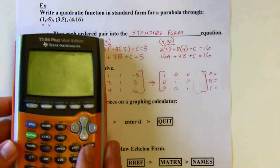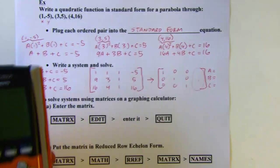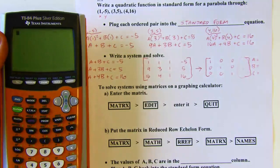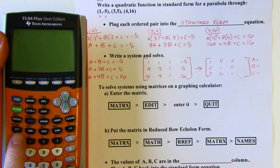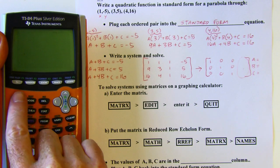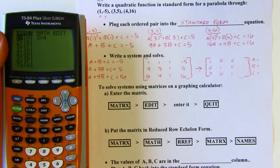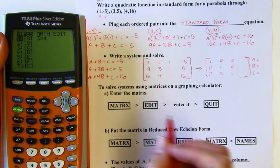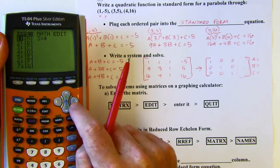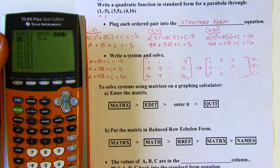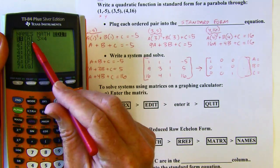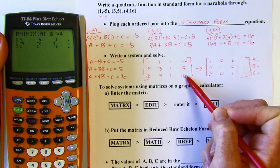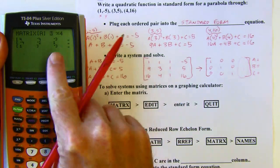So here's my calculator. I want to go to the matrix menu — it's above the x to the negative first button. I'm going to hit second and then x to the negative first to get to the matrix menu. Now I want to go over to edit at the top and scroll over to edit, then hit enter. I'm going to put it in as matrix A. The dimensions here are three by four — three rows, four columns. That's already set up here. If it wasn't, just hit three, enter, four, enter.